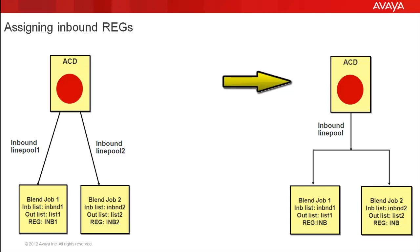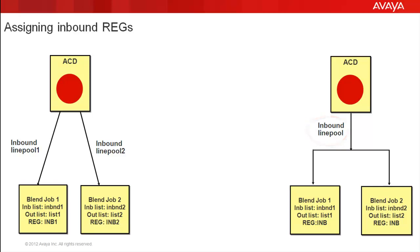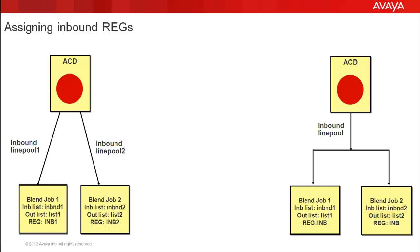On the other example on the right of the screen there is only one inbound line pool, so incoming calls can go to either of the two blend jobs with no control as to which job takes the call. So if a customer whose record is on outbound calling list two calls in and by chance the inbound call comes into blend job one, the campaign update will search for the record in outbound calling list one only — not in list two. That customer's record will remain untouched on list two and will not be marked as uncallable, so it can get called from blend job two.